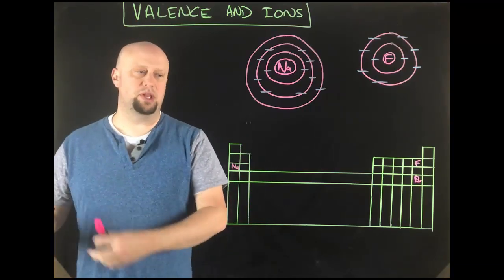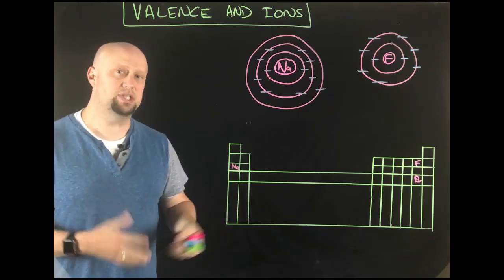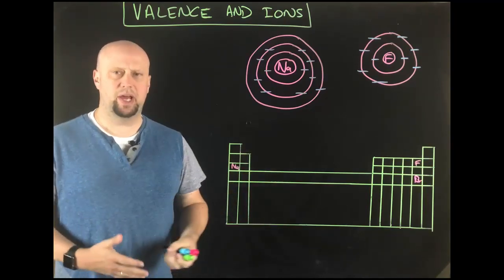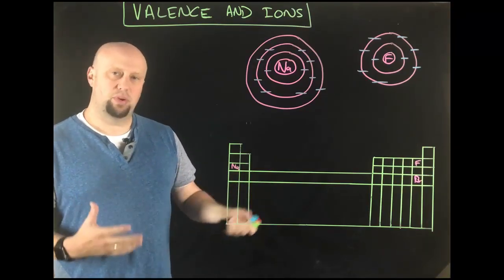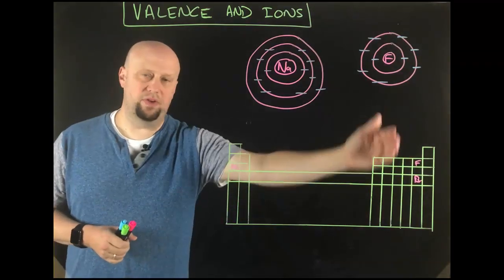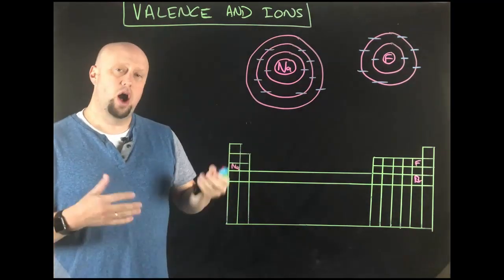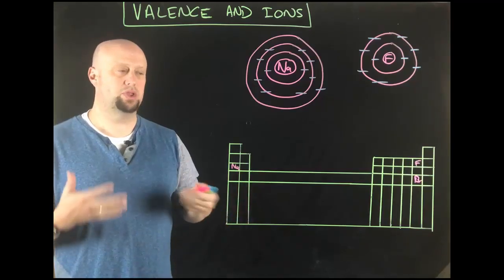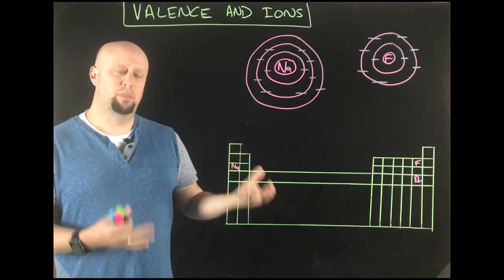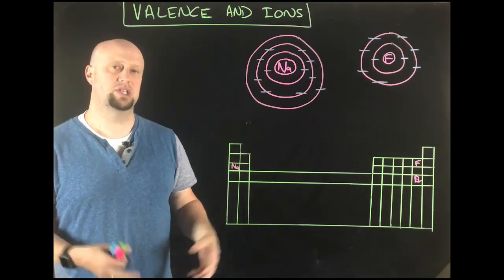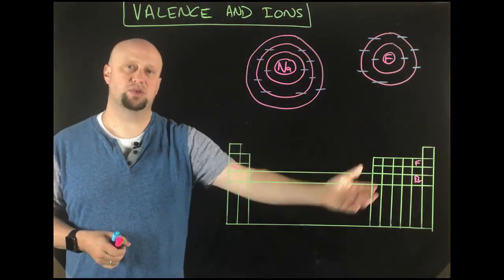To go back to what we already know about the periodic table — we said it's set up according to atomic number, which leads into the number of electrons something has. We also said it's set up according to properties, and those properties are largely determined by valence electrons, because the number of valence electrons in the outermost energy level actually determines how they react and what their properties are. The periodic table, set up by atomic number and by properties, both of those things essentially come back to electrons — specifically valence electrons.